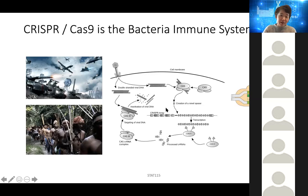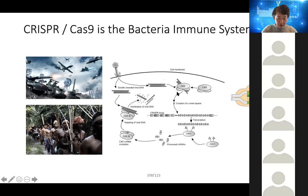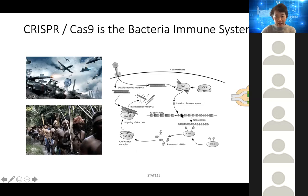Interestingly, bacteria have evolved over time to deal with viral infection. The way it does this is, if there are sequences that are unique on the virus, and if this bacteria is able to survive the viral attack, it will identify a piece of unique viral DNA and insert it into a DNA cassette of the bacteria genome. People first discovered this by sequencing the bacteria genome and noticing repeat sequences — this is kind of a police station for the bacteria.